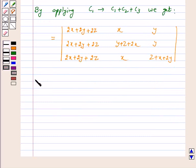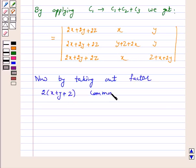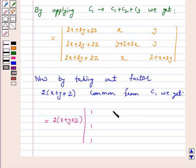Now by taking out the common factor 2 times x plus y plus z from c1, we get our left hand side is equal to 2 times x plus y plus z into determinant 1, x, y, 1, y plus z plus 2x, y, 1, z plus x plus 2y.